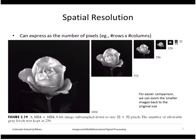Spatial resolution can be expressed as the number of pixels in the image — for example, the number of rows and columns. Here we're showing an image that has 1024 by 1024 rows and columns. We can subsample that image to get down to a smaller size: 512 by 512, 256 by 256, all the way down to 32 by 32.